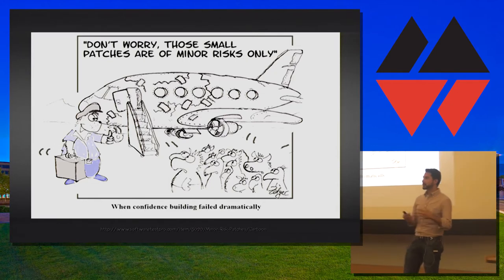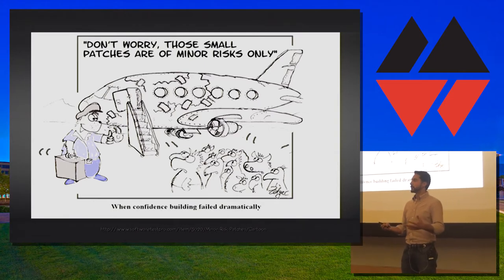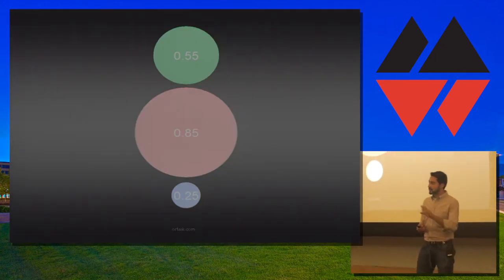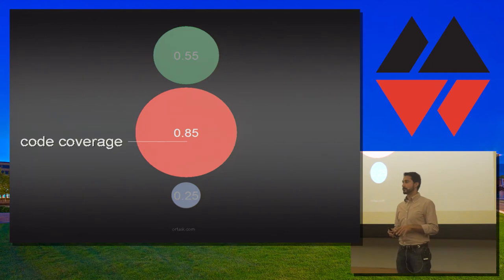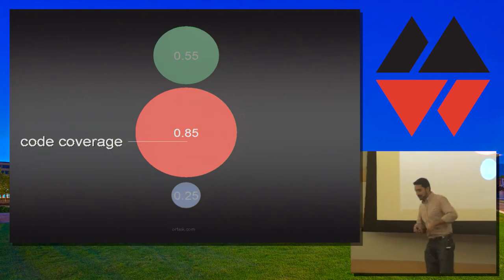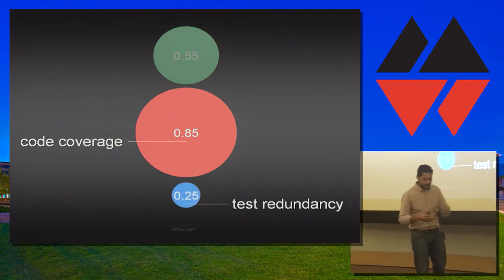And some of you might be thinking, well, there's code coverage for that, right? Code coverage is a good indicator for the quality of our tests. Well, not really. And let me show you some numbers, and I'll tell you where these numbers come from in a moment. So, the average test suite, the average Ruby test suite, captures around 85% code coverage. That's not bad, right?